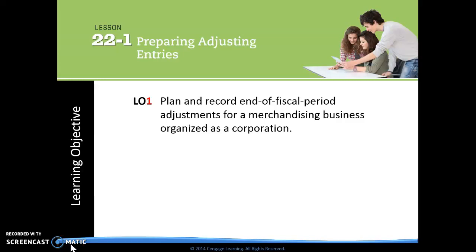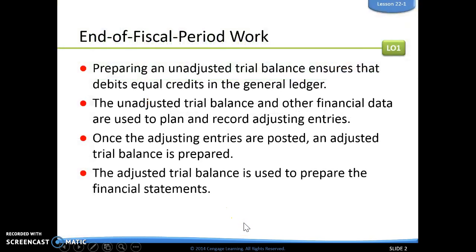22-1 is preparing adjusting entries. We've done adjusting entries before, just a little bit different now for a corporation. We need to plan and record end of fiscal period adjustments for a merchandising business organized as a corporation. Preparing an unadjusted trial balance ensures that debits equal credits in the general ledger. The unadjusted trial balance and other financial data are used to plan and record those adjusting entries. Once the adjusting entries are posted, an adjusted trial balance should be prepared, which is then used to prepare the rest of our financial statements.